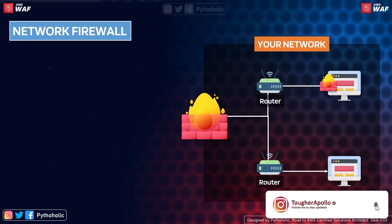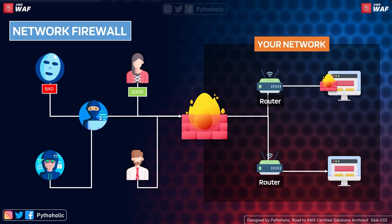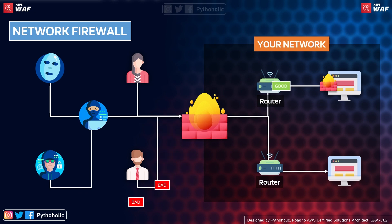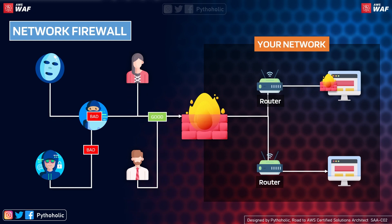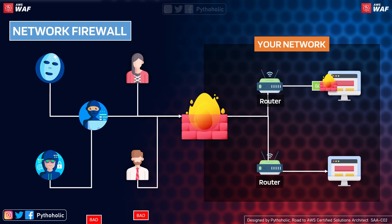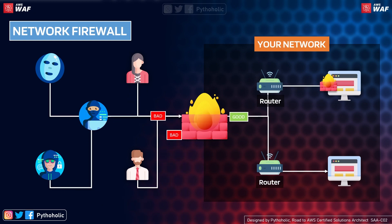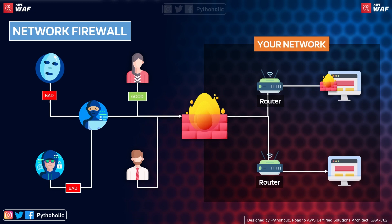Next is the network-based firewall, which controls traffic coming in and going out of the network. The main difference is that it is a dedicated device or system that helps you track, monitor, and log traffic flowing in and out. It sits between your network and the outside world. You can also install an individual host-based firewall on your device alongside it for more granular controls.